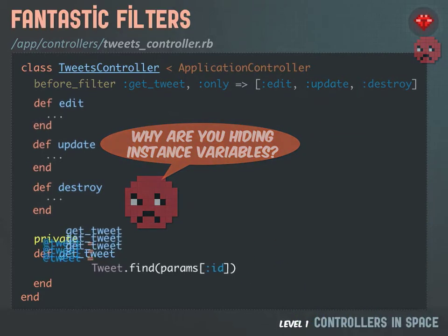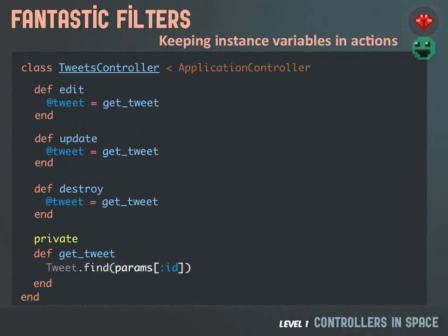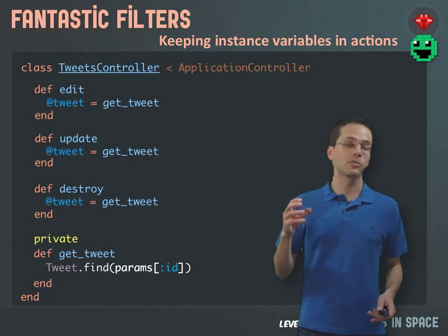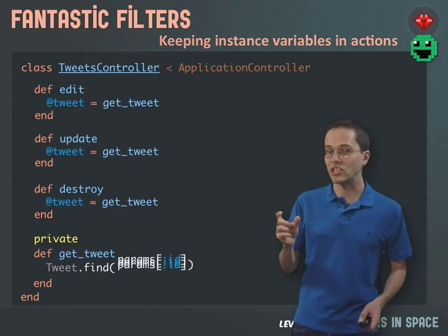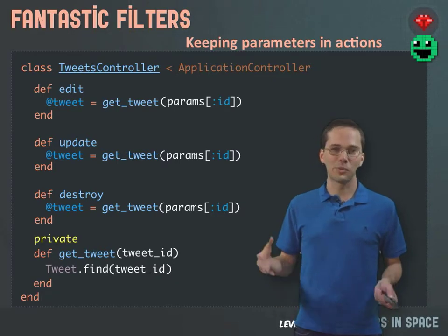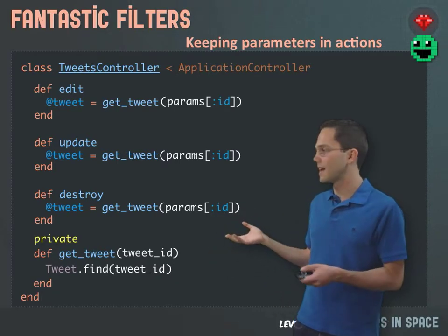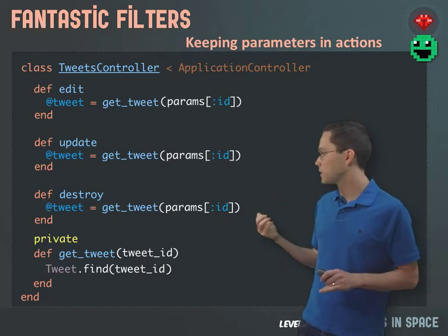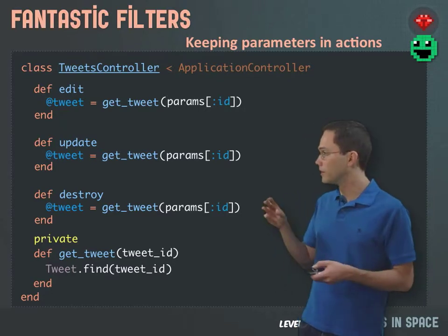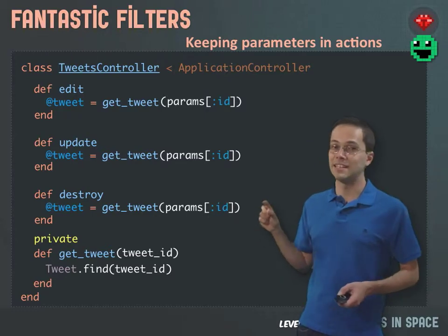So how might we fix this? First, we might declare the tweet variable inside each of our actions and have each of them call the getTweet method. Another best practice along the same lines is that parameters should only be accessed from inside the action. Here we're referencing the parameters and sending that into our getTweet method, which now has another parameter called tweetId. You might ask, what's the point of a helper if it's that simple? In this case, you might just want to do Tweet.find(tweetId) in each of those. But for more complex examples where you want to test each part of your controller, you definitely might want to encapsulate that inside of a method.